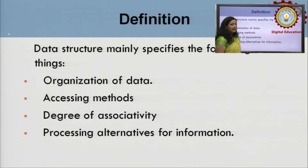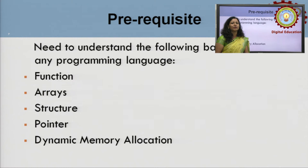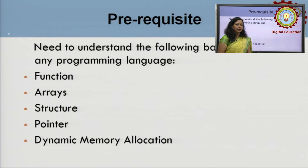Next, the prerequisites. Obviously when we study any subject, we have some pre-requirements. We will study data structure and algorithms here, but computers don't understand algorithms directly — only through programs written in high-level programming languages can we develop applications. So before studying data structure, knowledge of a programming language is essential. You should have clear concepts of functions, arrays, structures, pointers, and dynamic memory allocation in C, C++, or any language you are comfortable with.